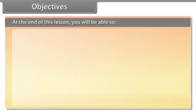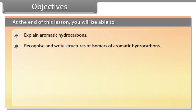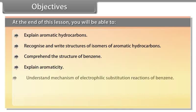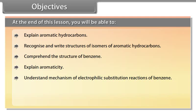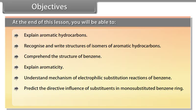Objectives. At the end of this lesson, you will be able to: explain aromatic hydrocarbons; recognize and write structures of isomers of aromatic hydrocarbons; comprehend the structure of benzene; explain aromaticity; understand the mechanism of electrophilic substitution reactions of benzene; predict the directive influence of substituents in mono-substituted benzene ring; and learn about carcinogenicity and toxicity.